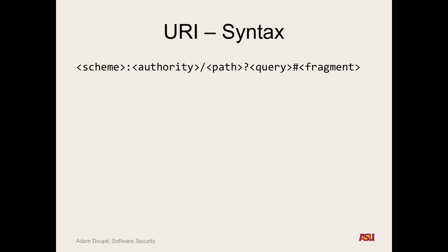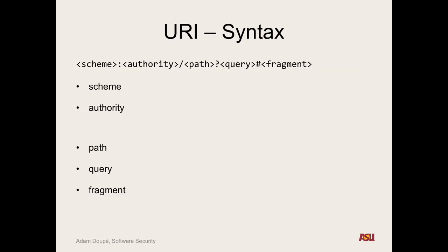Does this look familiar? Some fields can be optional — for example, there are URLs without question marks, no query, no fragment. What makes the URI general is the scheme field. In normal HTTP URLs the scheme is 'http.' Other URI schemes include FTP, HTTPS, LDAP, RSYNC, and even gopher.